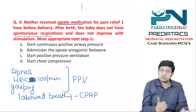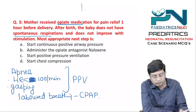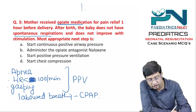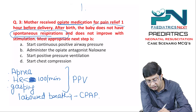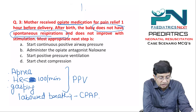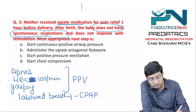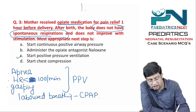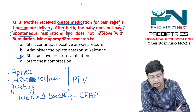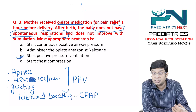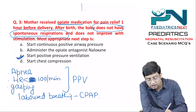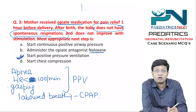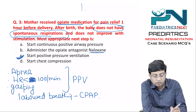Since this child has no spontaneous respiration — apnea — the correct action is to start positive pressure ventilation, not CPAP (which requires some respiratory effort to be present). Administering the opiate antagonist naloxone has not been found to be beneficial in this scenario.